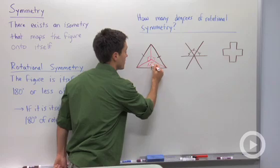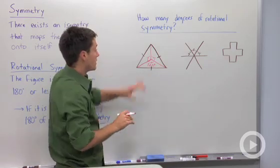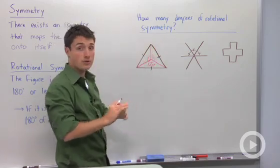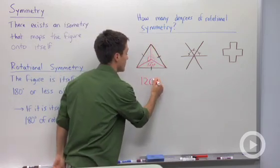I see that if all three of these are congruent, which they are since it's an equilateral triangle, then they all must be 120 degrees. So yes, this has rotational symmetry, and after every 120 degrees of rotation, it will be itself.